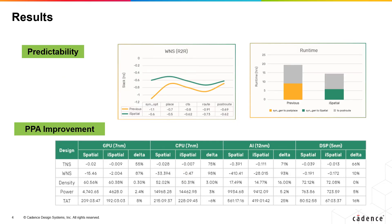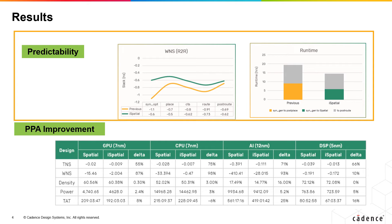Since iSpatial technology integrates with GigaPlace and GigaOpt tools, the gap between the front-end and back-end is closed, resulting in excellent predictability of PPA earlier in the design flow. This enables RTL designers to be more productive and confident when handing off their RTL. The comparison between WNS after iSpatial technology and after Innovus system placement shows strong consistency, meaning iSpatial results are reliable for PPA prediction and netlist evaluation. These results are available to the designer earlier than P&R, enabling faster decisions.